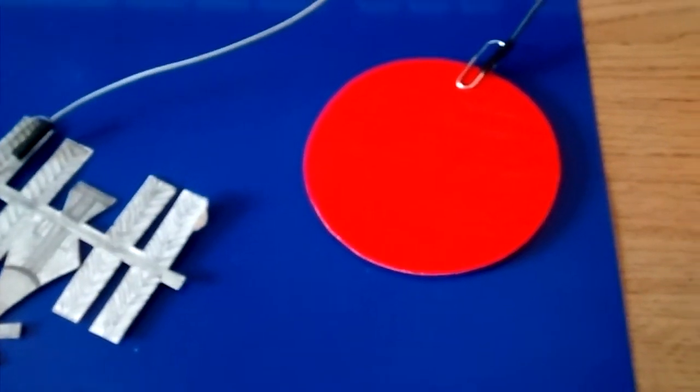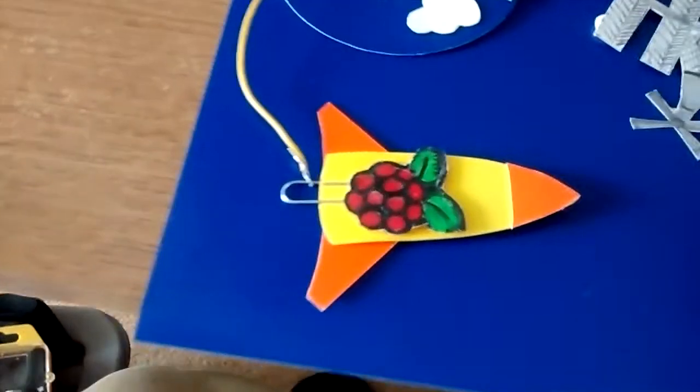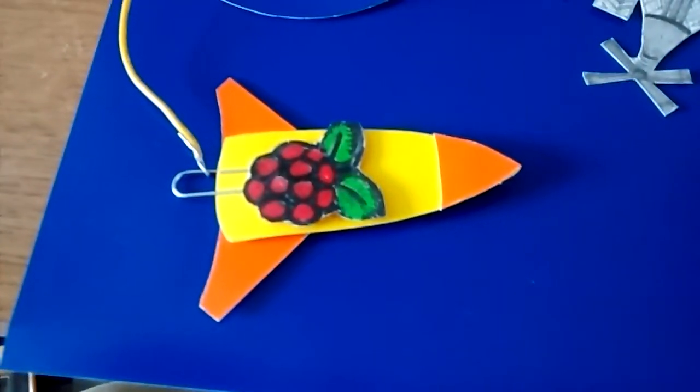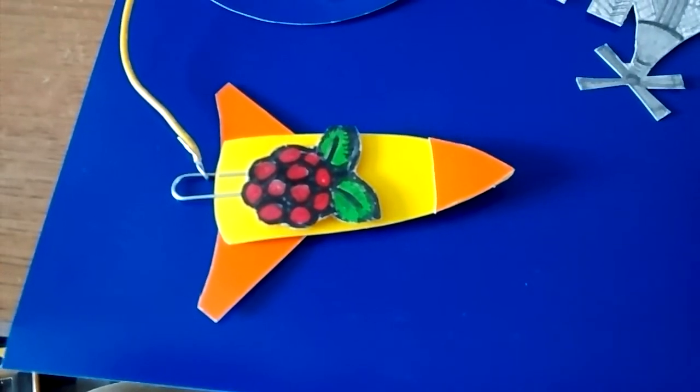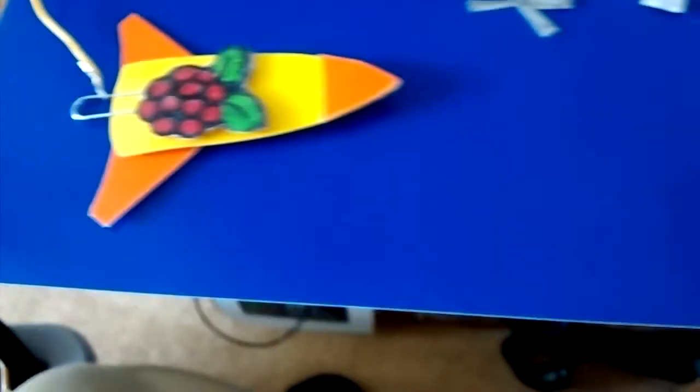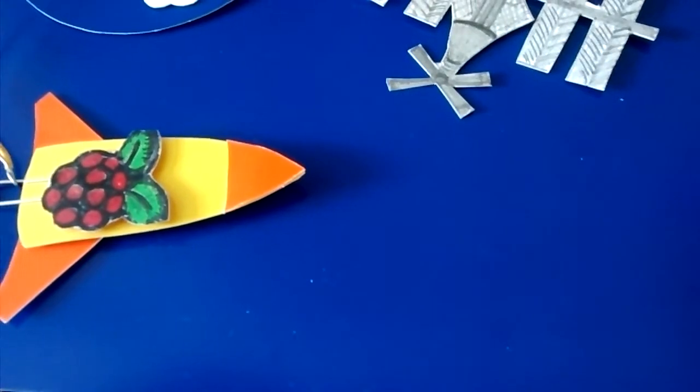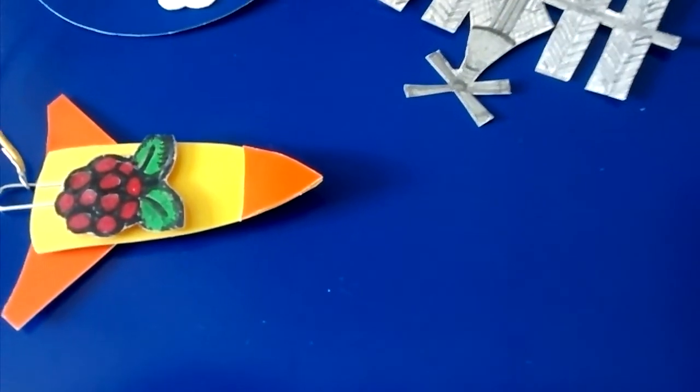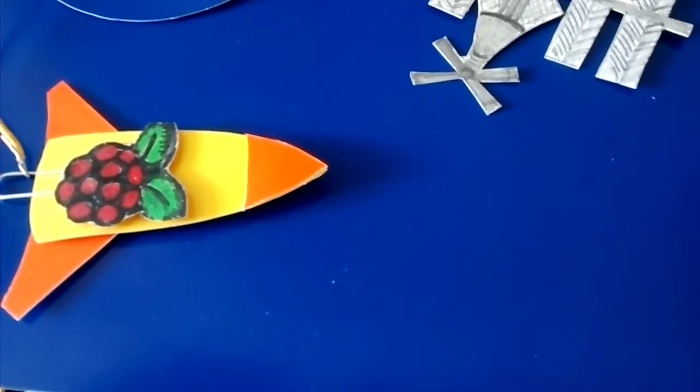Trust me, there is some shading to that, but the camera is a bit rubbish. We also have the good ship, the USS Raspberry Pi, and you'll notice that space is currently blue. We had a problem and we couldn't find any black card, so blue had to do.